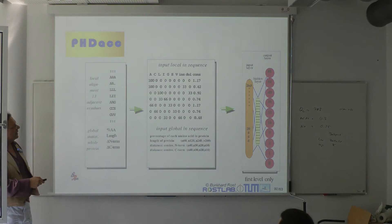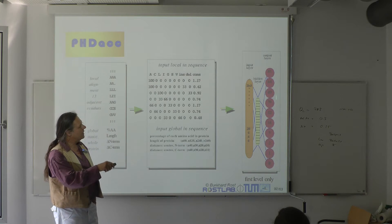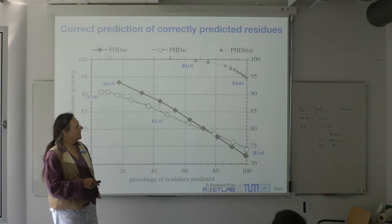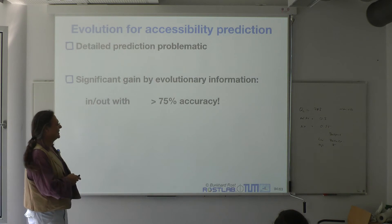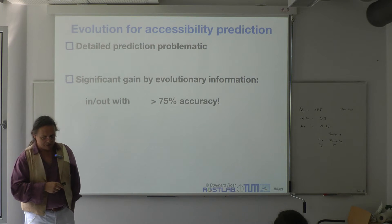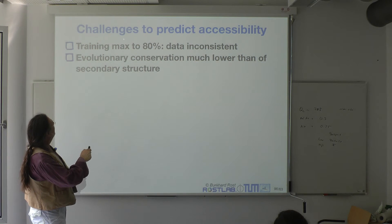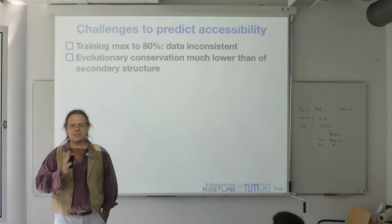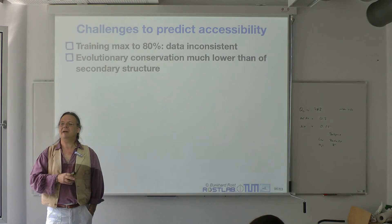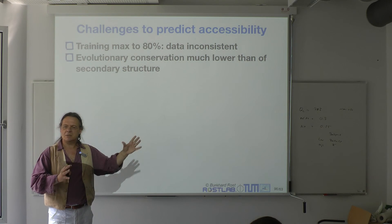There is a method that uses evolutionary information to predict solvent accessibility. The solution is in 10 states because of a square root function — giving more precision at low exposure values. The percentage accuracy is around 75%. For a two-state situation it is roundabout 75%. You can never train to more than about 80%, because the problem in the evolutionary conservation sense is not defined much better than 80%: when you look between structures similar in 3D, you still see differences in solvent accessibility, and that explains why you cannot fully train beyond that ceiling.